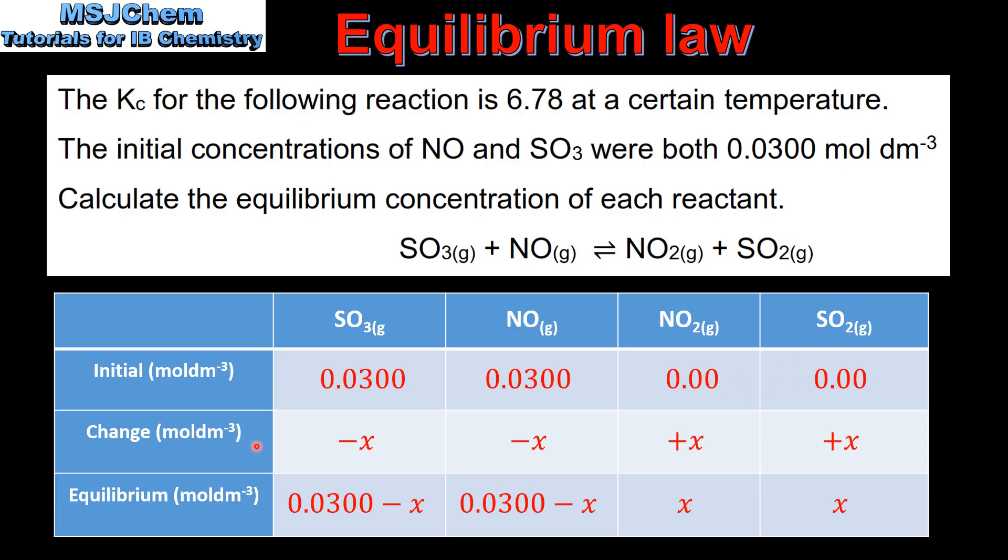Next we have the change in concentration. We look to the balanced equation and we can see that all the coefficients are ones, so it will be negative X for the SO3, negative X for the NO, plus X for the NO2, and plus X for the SO2.